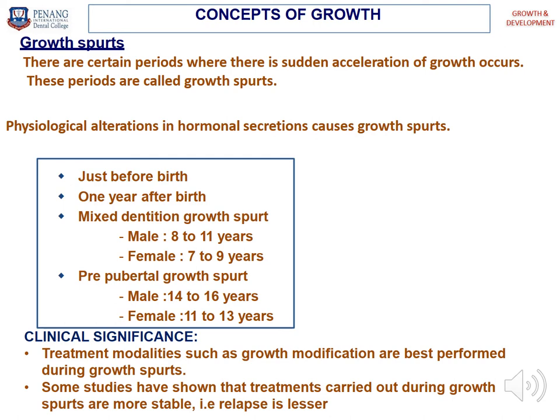What is the clinical significance of the pre-pubertal growth spurt? Treatment modalities such as growth modification are best performed during the growth spurt. For growth modification, functional appliances are used in cases such as Class II Division 1 malocclusion where the patient needs a twin block appliance. The perfect timing is around the pre-pubertal growth spurt, and some studies have shown that treatment carried out during the growth spurt results in more stable outcomes with less relapse.